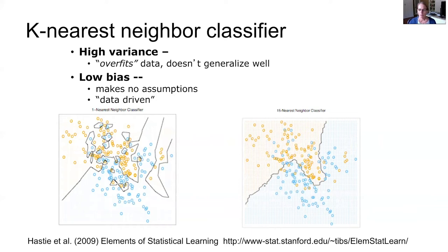If you drew another sample from the same population of species presences and absences, these boundaries generated from the training data are likely to make a lot of errors because the rules are very closely fit to the data. These are said to be data-driven models with low bias — they don't have a lot of assumptions about what the form of that boundary or classification rule is.